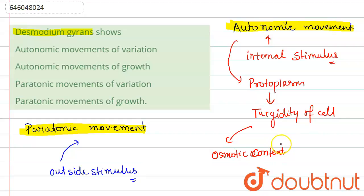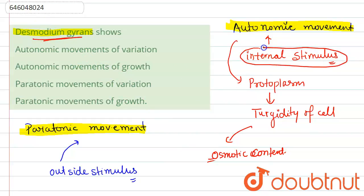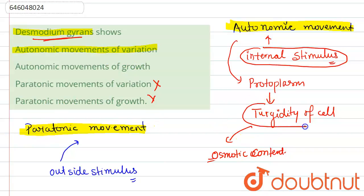A movement shown by a plant part — since Desmodium gyrans shows this internal stimulus, options C and D are wrong; only autonomic movement takes place. We must choose between option A — autonomic movement of variation — and option B — autonomic movement of growth. The correct answer is autonomic movement of variation, because the movement occurs due to the change in turgidity of the cell, causing variation. So option A is the correct answer.